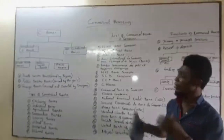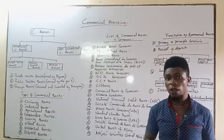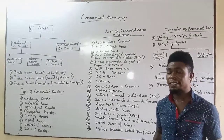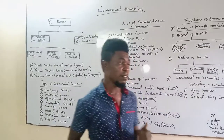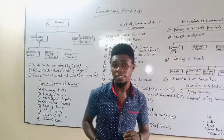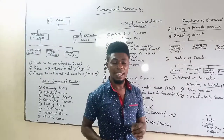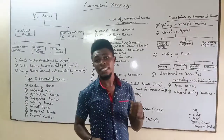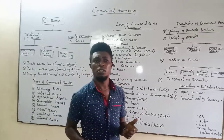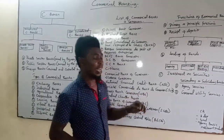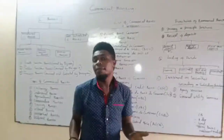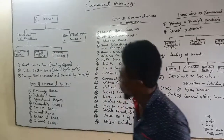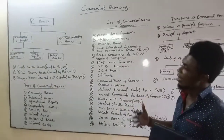Today we are going to be looking at the commercial banking system. Commercial banks are banks that offer a variety of services, ranging from accepting deposits, lending those deposits to customers, and offering basic investment products to the public. The central bank does not deal with the public, unlike commercial banks that actually deal with the public. Commercial banks are divided into two: scheduled commercial banks and non-scheduled commercial banks.